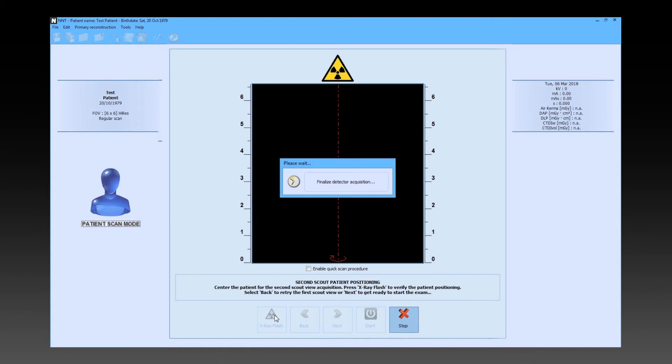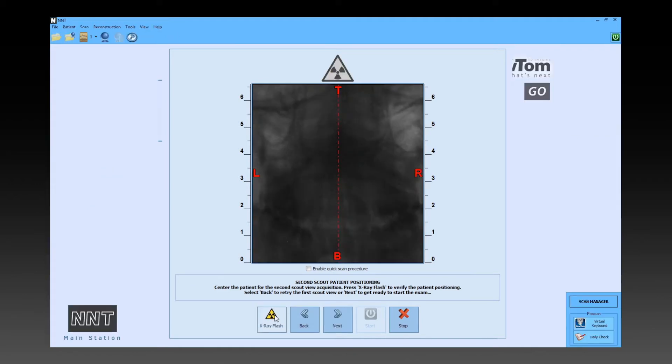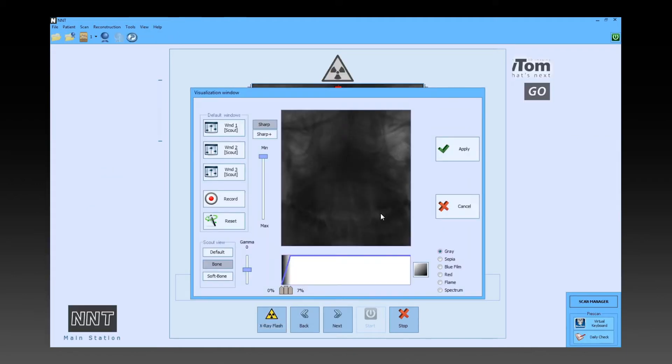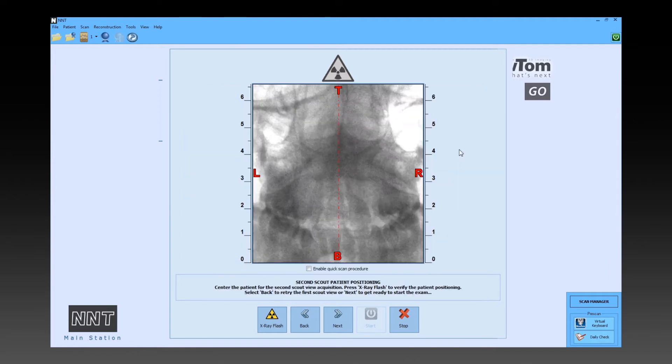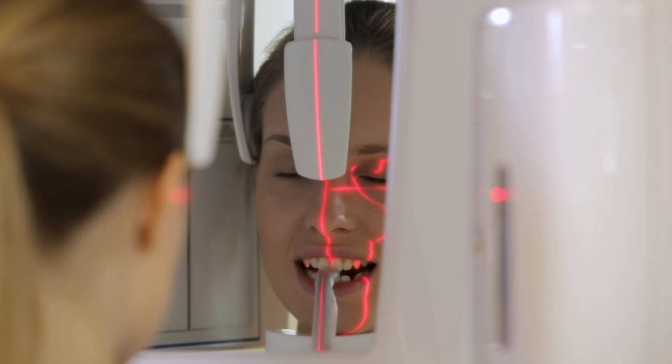The next front scout image is only performed to automatically set exposure parameters. When the parameters are set and the patient is correctly positioned, the dentist presses next and before leaving the room, asks the patient to close her eyes and swallow.